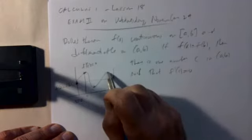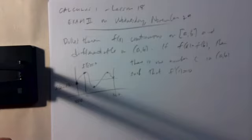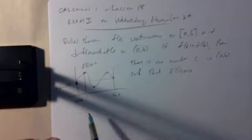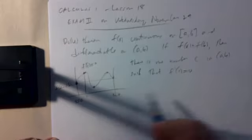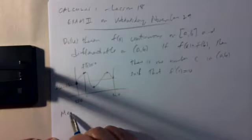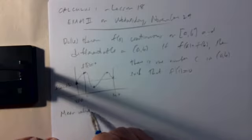In fact, in this graph there are three such points where the derivative is zero. Rolle's theorem simply says there's always at least one. And the generalization of this is the mean value theorem.